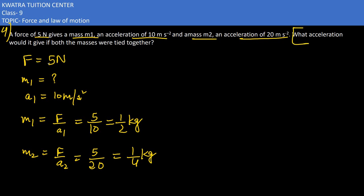Now they are saying what acceleration would it give if both the masses were tied together? Let me add the masses. M1 plus M2 would give you half plus 1 by 4. Take LCM of 2 and 4 which is 4. Multiply the first value by 2, so 2 plus 1 is 3 by 4 kg.